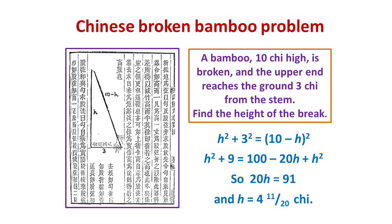To solve this with our algebraic notation, we let h be the height of the break. Then the longest side is 10 minus h, and the base of the triangle is 3. By the Pythagorean rule, h² + 3² = (10 - h)². Multiplying out and solving this equation then gives the height's value to be 4 and 11 twentieths chi.